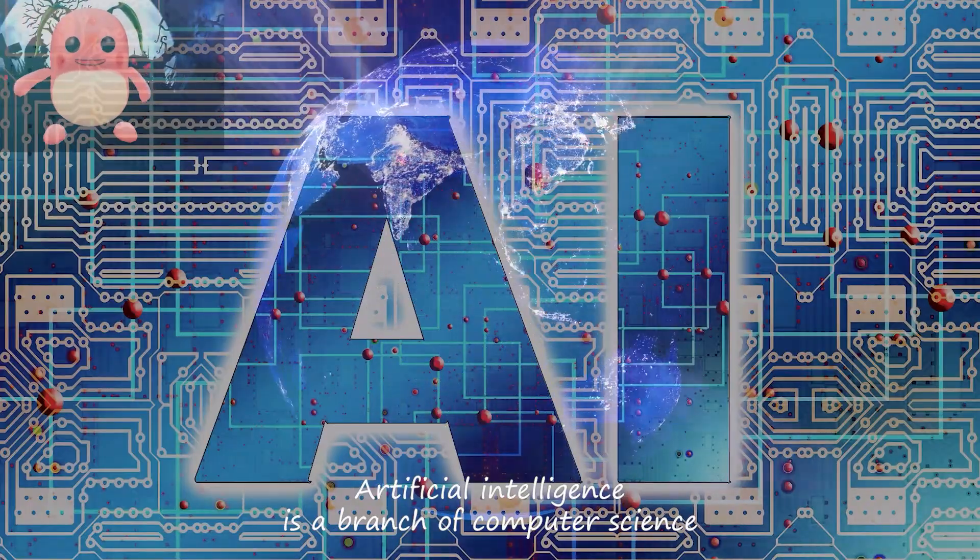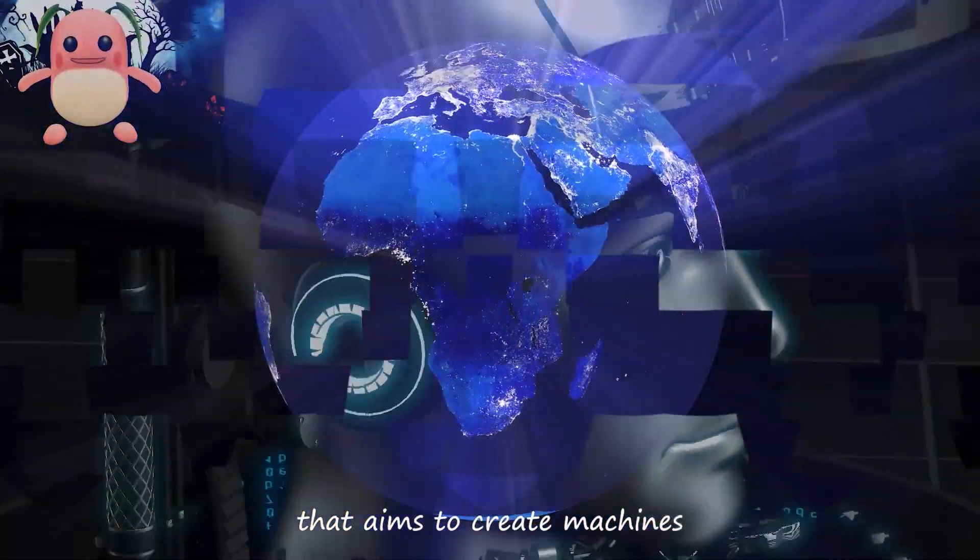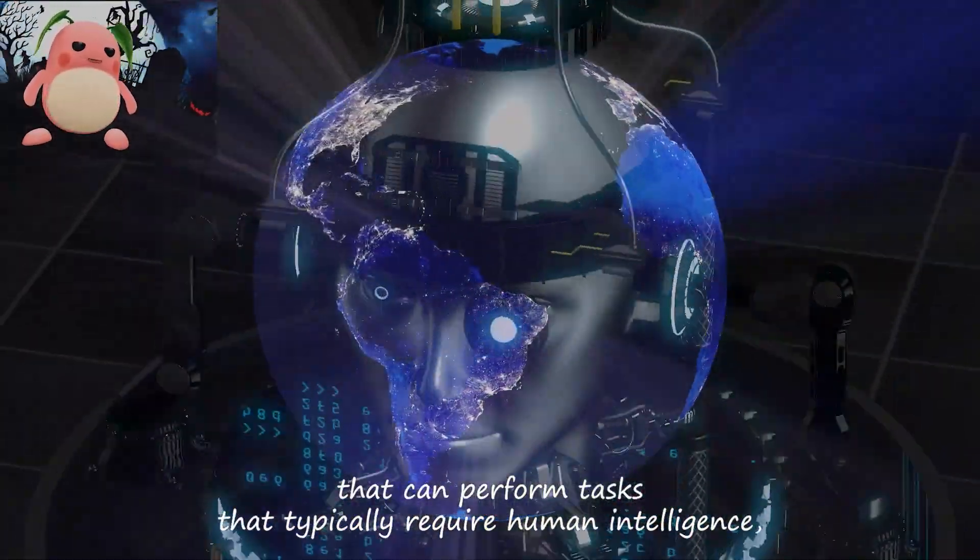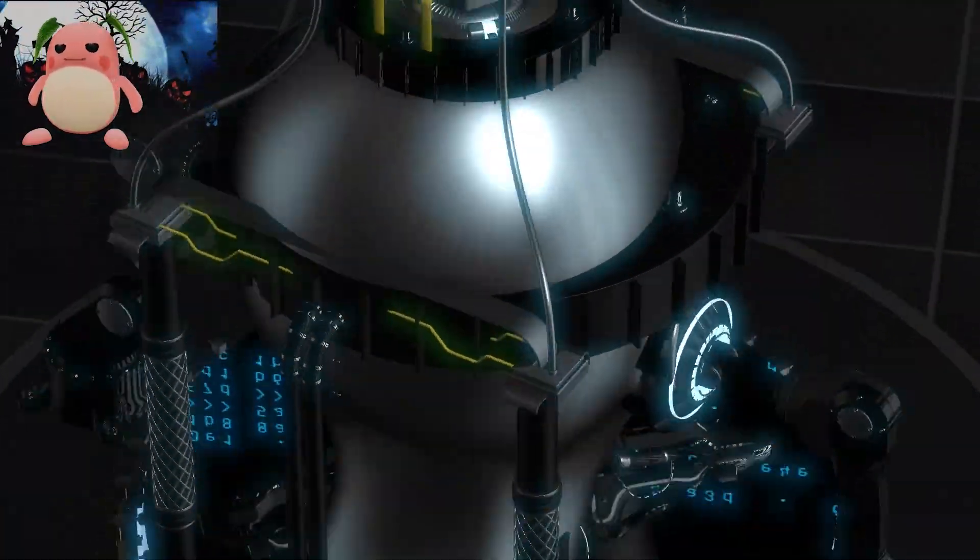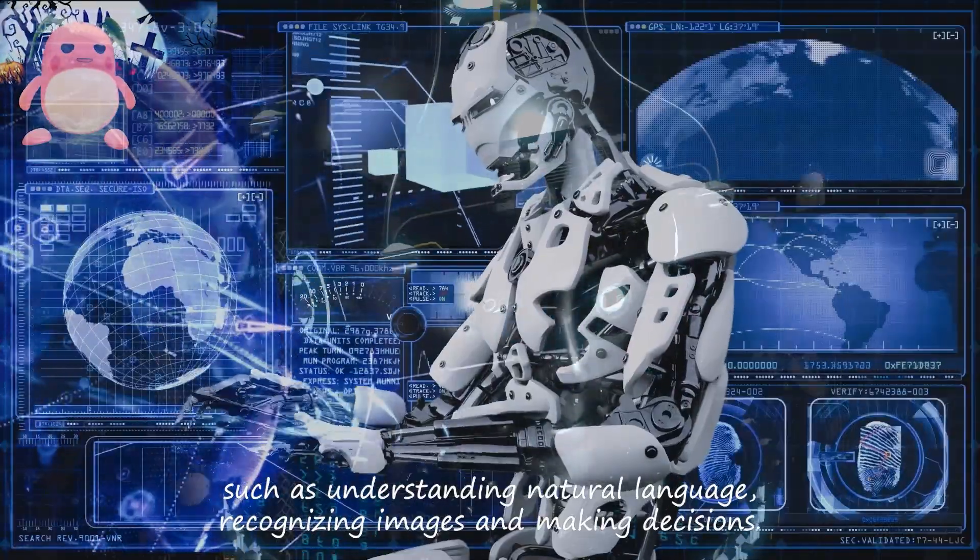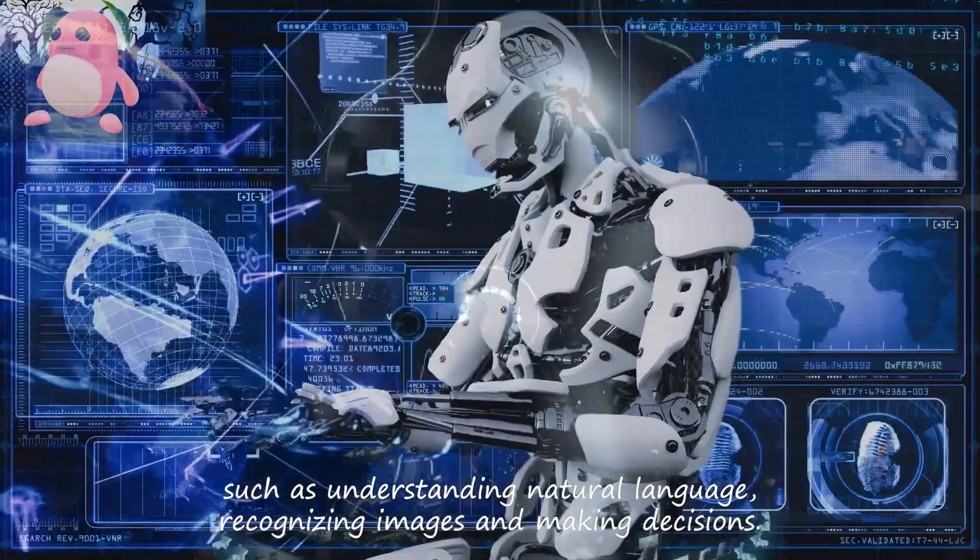Artificial intelligence is a branch of computer science that aims to create machines that can perform tasks that typically require human intelligence, such as understanding natural language, recognizing images, and making decisions.